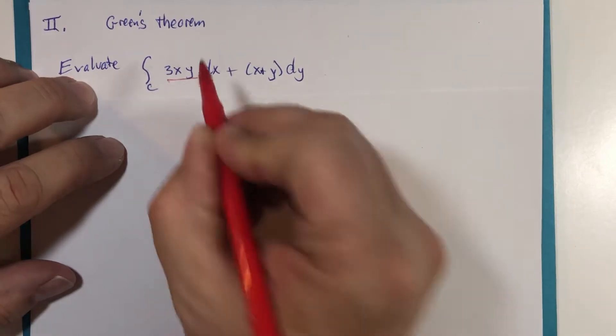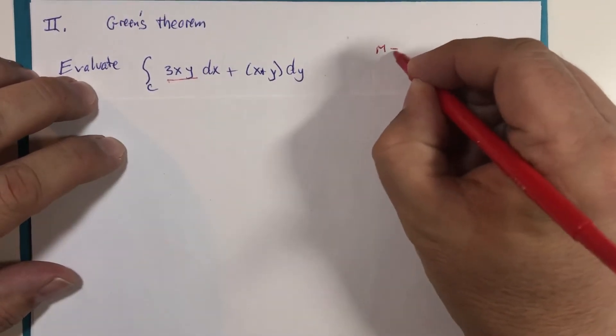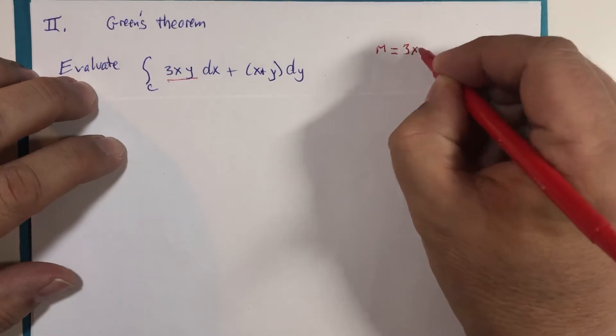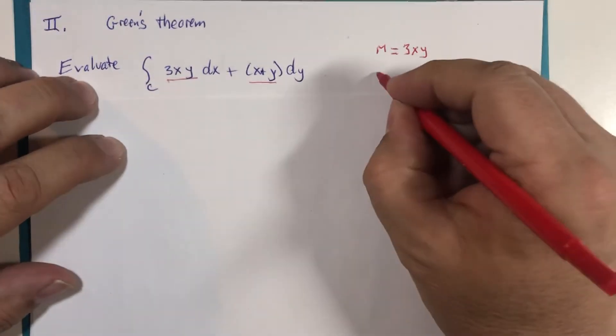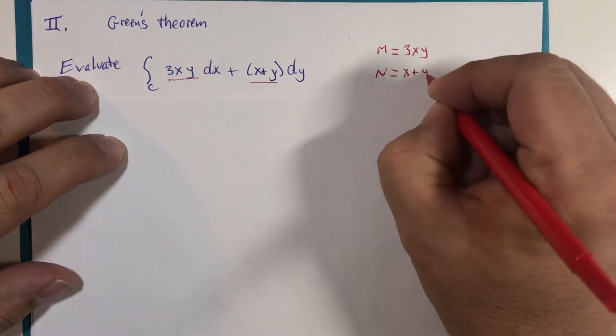This would represent the component m, 3 times x times y. This would be the component n, x plus y.